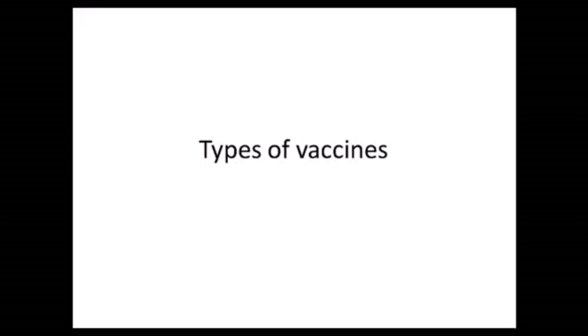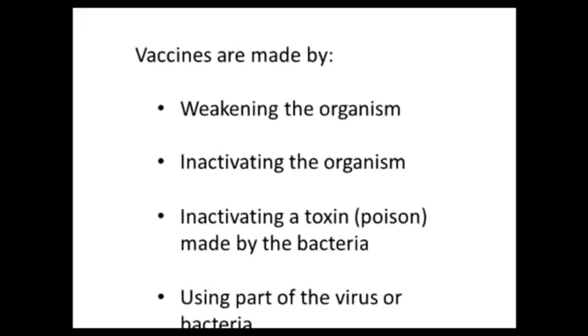There are different types, so let's look at how vaccines are made. Vaccines are made either by weakening the organism — in this context we need to remember the word attenuation, whereby the organism loses its pathogenicity. The second method is by inactivating the organism, in other words by killing the organism, so there is no question of pathogenicity here.